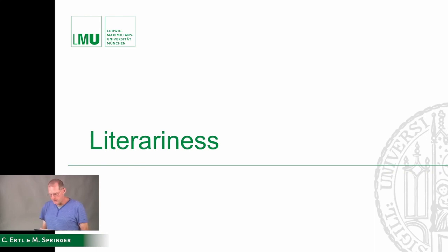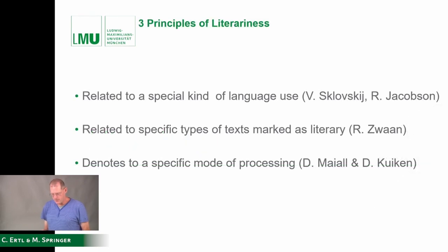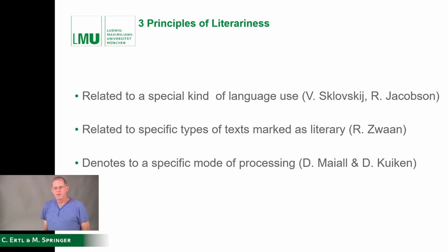A few words about literariness beforehand. The premise is to cause estrangement or defamiliarization when perceiving literature. There are three theoretical approaches to explain literariness: the first is related to a special kind of language use in texts; the second refers to a specific type of text marked as literary; and the third denotes a specific mode of processing when reading literature.